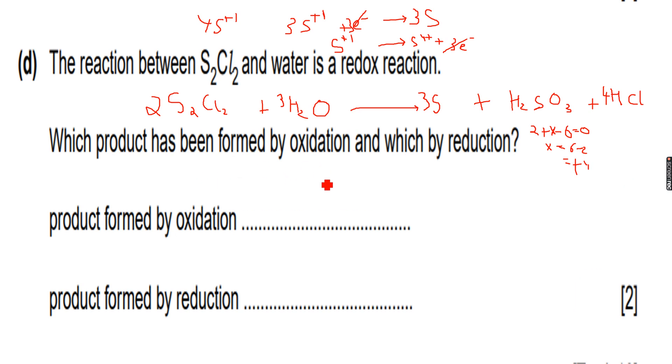Which product has been formed by oxidation and which product has been formed by reduction? You can see that when we went from S plus one to S plus four, the oxidation number increased, so this was oxidation.